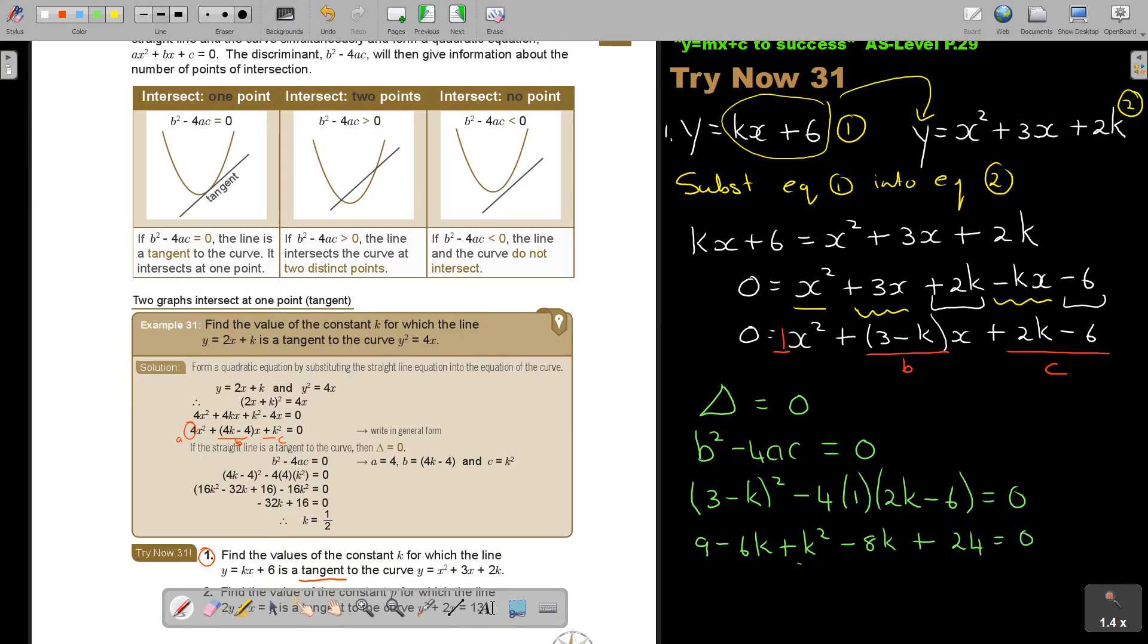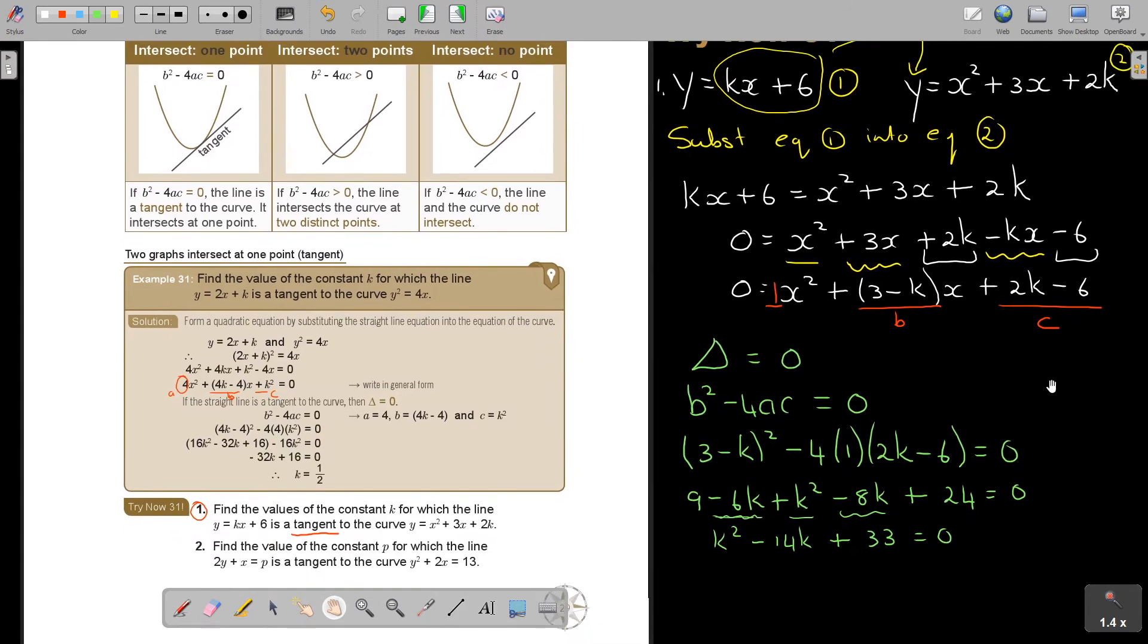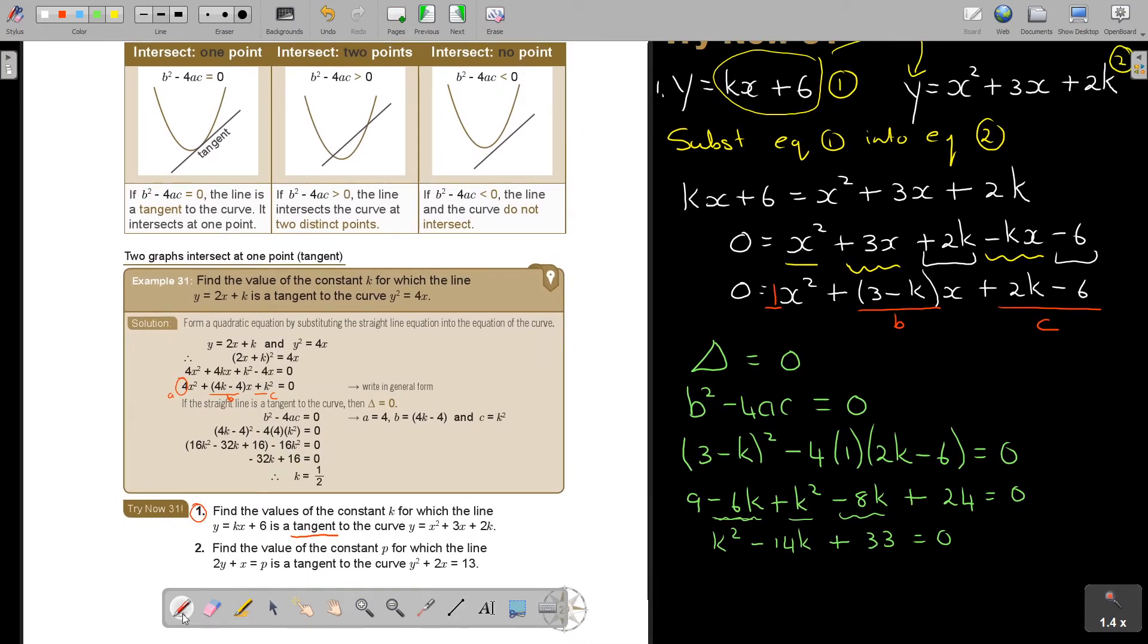This is my K squared. This is minus, minus, so it's going to be minus 14K. And this is going to be plus 33K. And this is going to be equal to 0. Now I'm just going to factorize it.